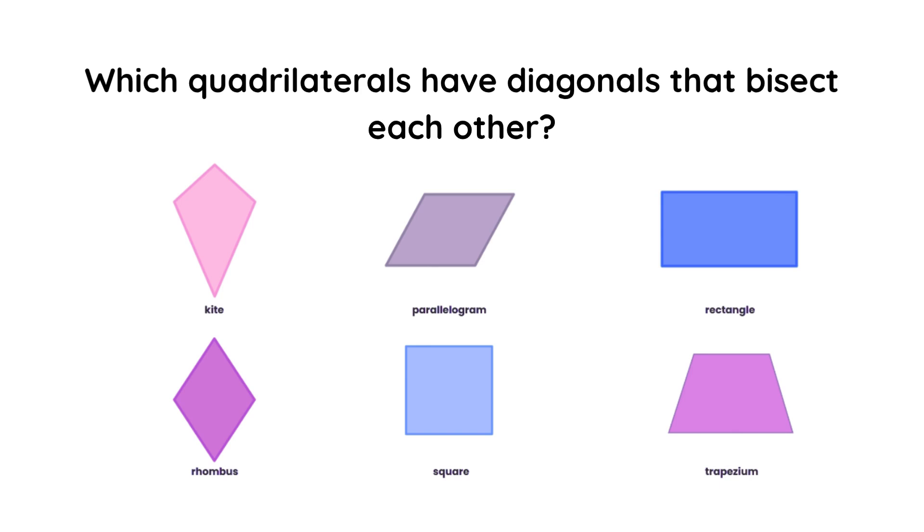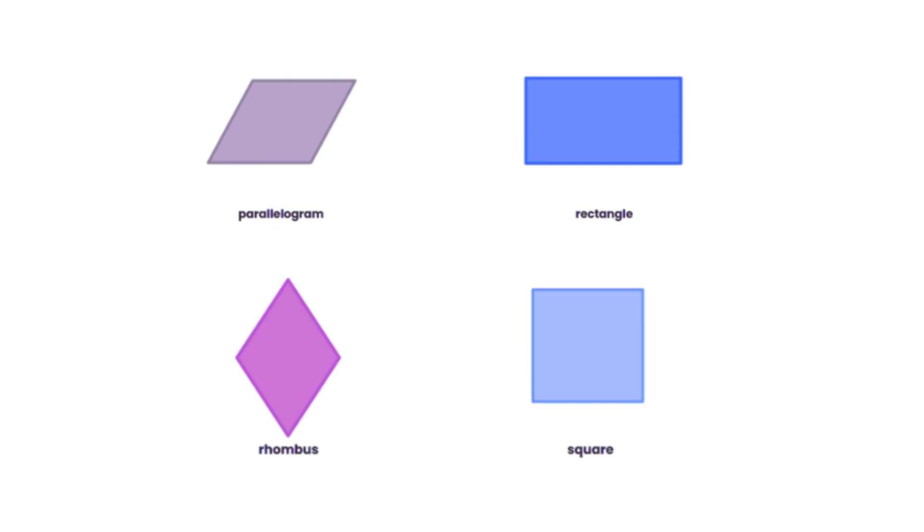Which quadrilaterals have diagonals that bisect each other? The answer is parallelogram, rectangle, rhombus, and square.